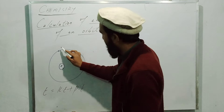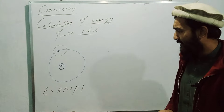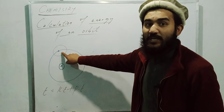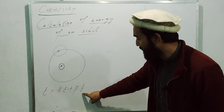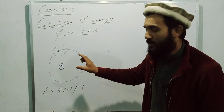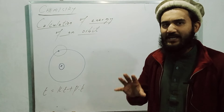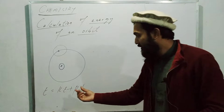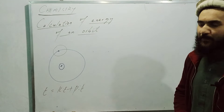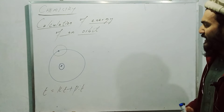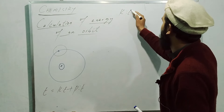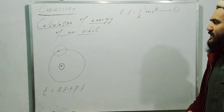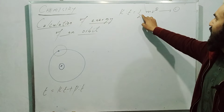The total energy of the electron revolving here is the sum of kinetic energy and potential energy. The kinetic energy is due to its motion. You know that the kinetic energy for any body has the formula: KE = ½mv². We call this Equation 1. This is a well-known result — the kinetic energy of this electron is ½mv².